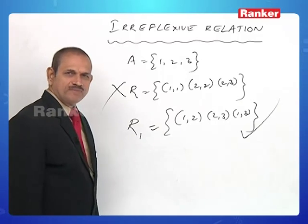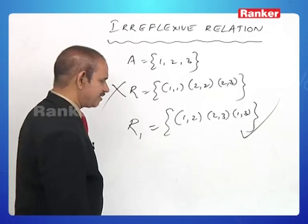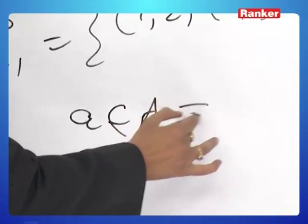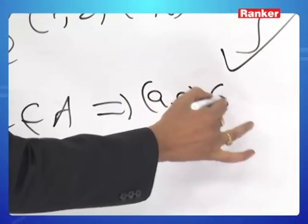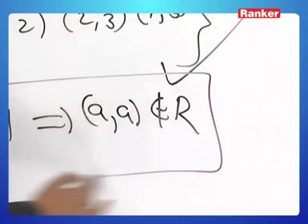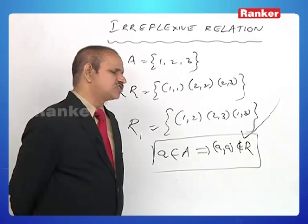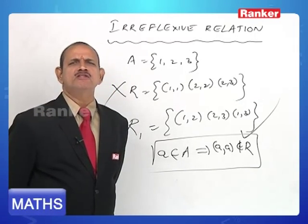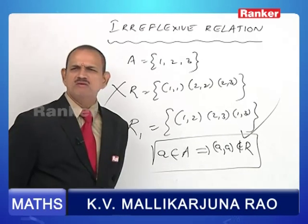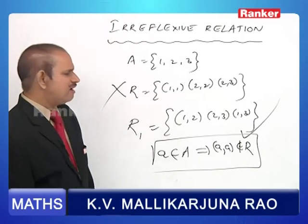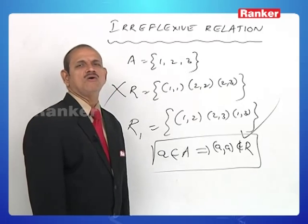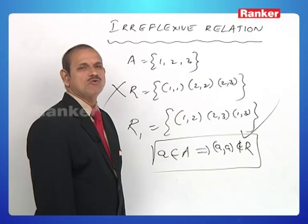The mathematical form of the definition of an irreflexive relation is: for all a belonging to A, the ordered pair (a,a) does not belong to R. This is the strong way to define an irreflexive relation — not even a single reflexive pair, such as (1,1), (2,2), or (3,3), can ever be an element of the relation.